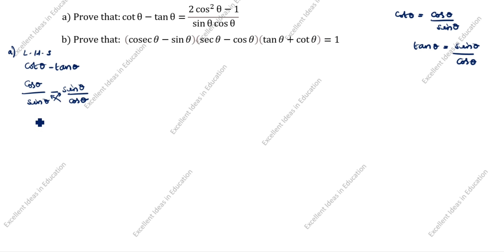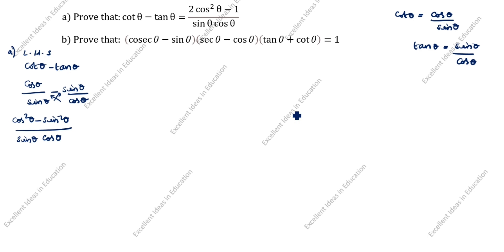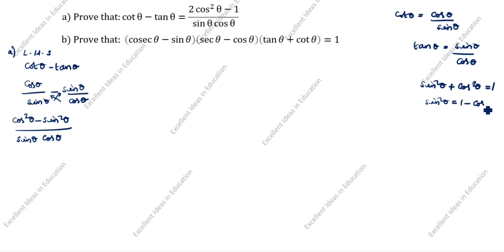We will cross-multiply. Next step: cos²θ minus sin²θ, divided by sin θ into cos θ. Now, sin²θ plus cos²θ equals 1. What is the sin²θ formula? Sin²θ equals 1 minus cos²θ — bring cos²θ to the other side. So sin²θ is 1 minus cos²θ. This is the formula.